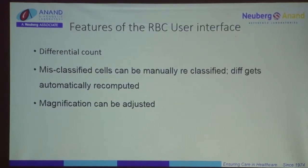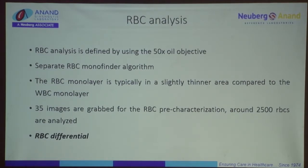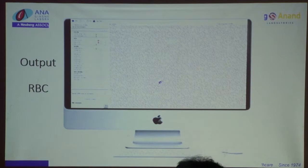A similar thing happens for RBCs — they get captured and classified. We know how many RBCs there are on a smear, but we always struggle with grading anisopoikilocytosis. What I might find as 2+ somebody else might think is 3+, and there is no clear-cut system because there is so much subjectivity involved. For RBC analysis, a lot of images are captured at different magnifications; about 35 images are grabbed, around 2,500 RBCs are analyzed, and the software chooses an area where RBCs are just touching each other so there is no overlap.